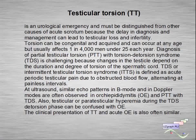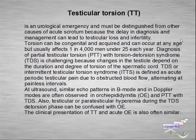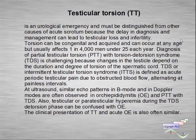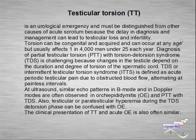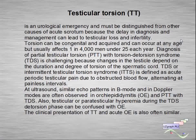Testicular torsion is a urological emergency and must be distinguished from other causes of acute scrotum, because delay in diagnosis and management can lead to testicular loss or infertility. Torsion can be congenital or acquired and can occur at any age, but usually affects one in 4,000 men under 25 each year. Diagnosis of partial testicular torsion with torsion-detorsion syndrome is challenging because changes in the testicle depend on the duration and degree of torsion of the spermatic cord.